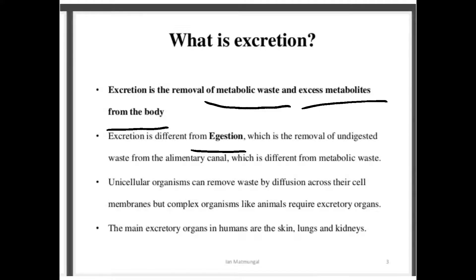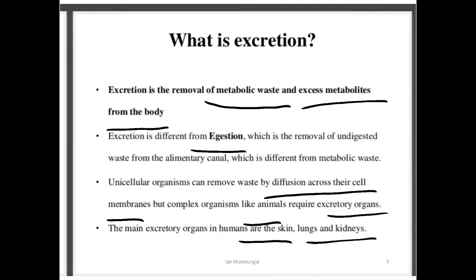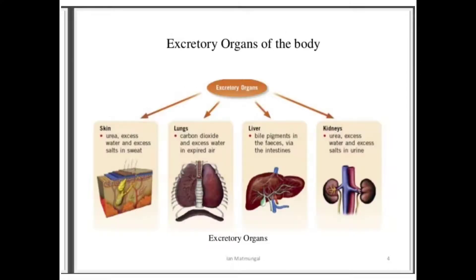Unicellular organisms can remove waste by diffusion across their cell membrane, but complex organisms like animals require excretory organs for this. For example, human beings. The main excretory organs in humans are the skin, lungs, and kidneys. Do not confuse excretion with digestion — both are different from one another.